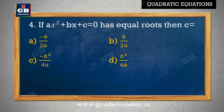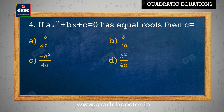If ax square plus Bx plus C equal to 0 has equal roots, then C equal to: A. minus b by 2a, B. b by 2a, C. minus b square by 4a, D. b square by 4a.